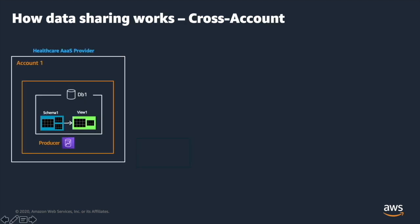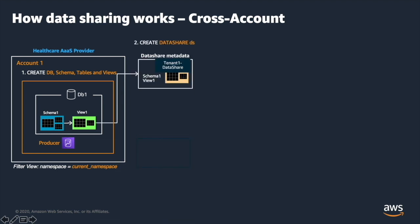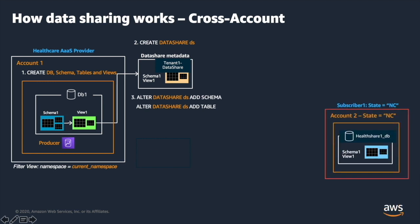To enable cross-account data sharing, we have a few simple steps. First, we create the database objects — schemas, tables, and views — to store the data. We introduce a new metadata object called data share. You can create a data share and add database objects, which are tables and views, to the data share.